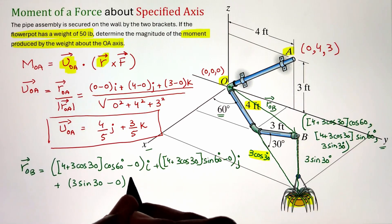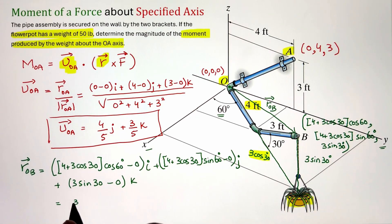Finally I have to figure out my force vector. In this case since the weight is acting vertically downward, our force vector will be negative 50K in Cartesian vector form.